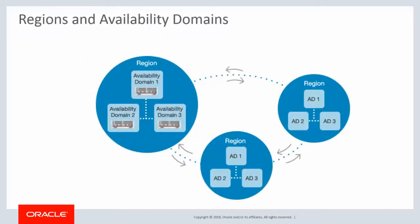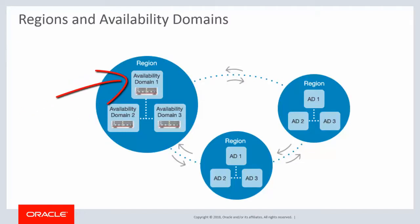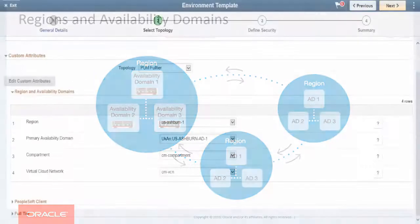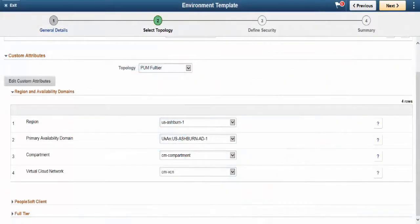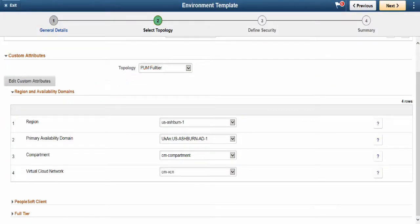OCI is physically hosted in regions and availability domains. A region is a localized geographic area, and an availability domain is one or more data centers located within a region. A region is composed of several availability domains. When you provision Cloud Manager in the OCI Compute Console, you can select availability domains, regions, and network configurations for your environment.